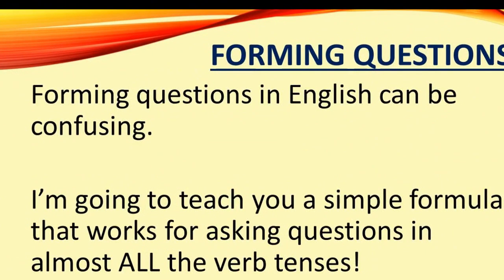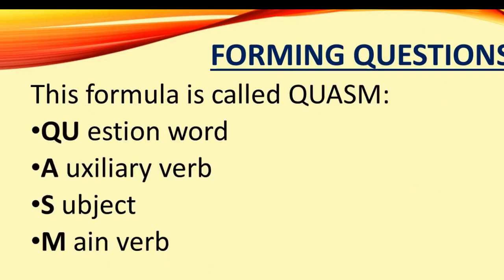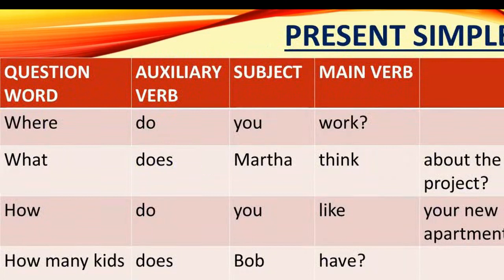Forming questions in English can be confusing, but today I'm going to teach you a simple formula that works for asking questions in almost all the verb tenses. This formula is called QUASM: Question word, auxiliary verb, subject, main verb. Let's see how it works in the present simple.